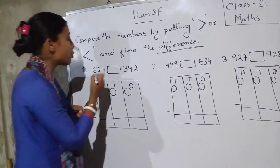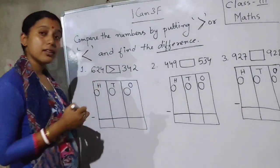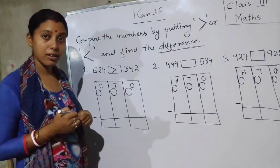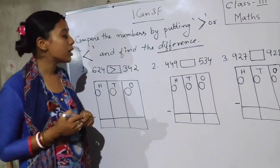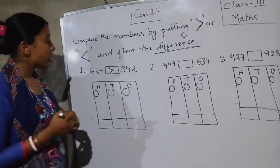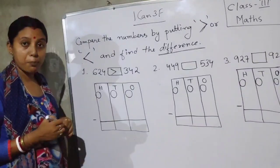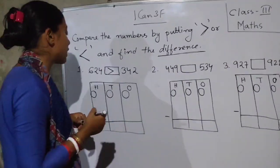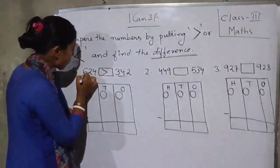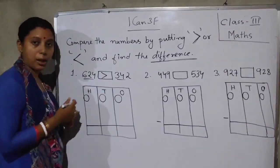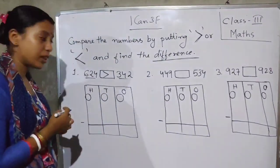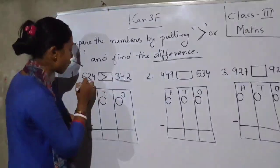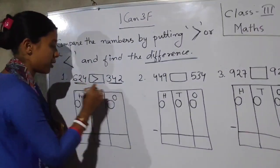So where will you put the sign? We put the greater-than sign because 624 is the greater one. Now what will we do? We will subtract the smaller number from the greater number. We will subtract the smaller number from the greater number. Understood?